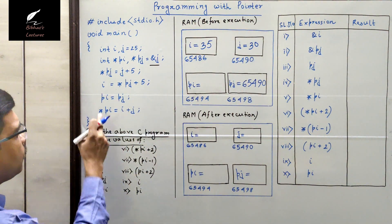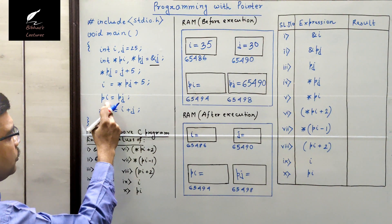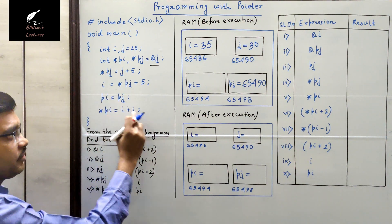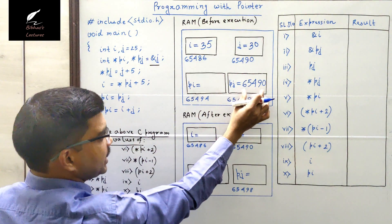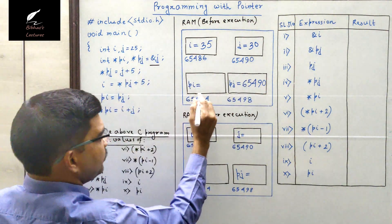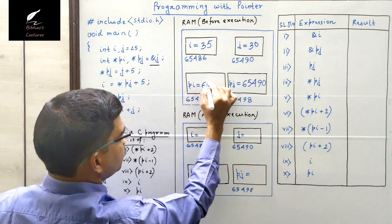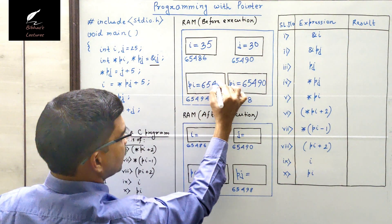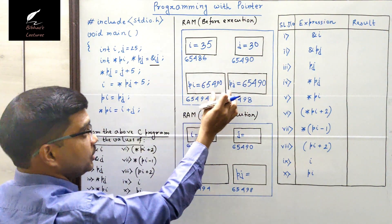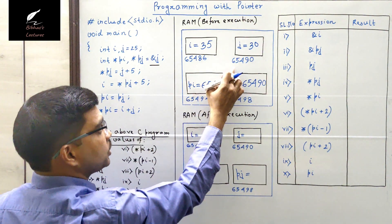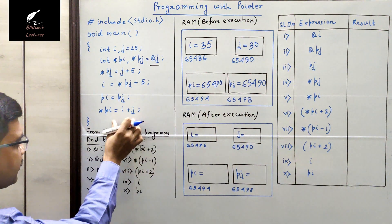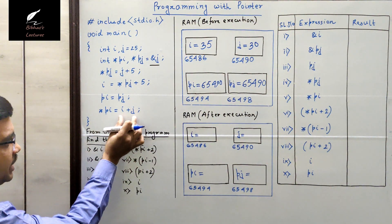In the next line we are assigning the value of pj to pi. pj is the address 65490, which is also assigned to pi. So pi value will also be 65490. That means pi and pj are pointing to the same address — the address of j.